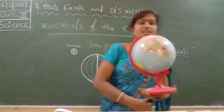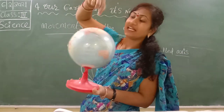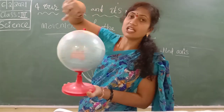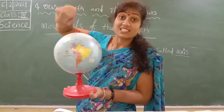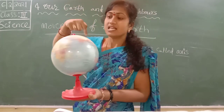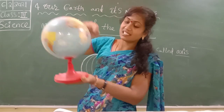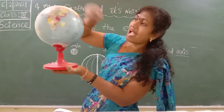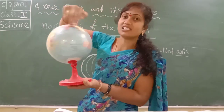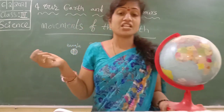This is our Earth. The Earth spins on its axis — this is called rotation. This is called the axis. It spins on its axis, and this is called rotation.